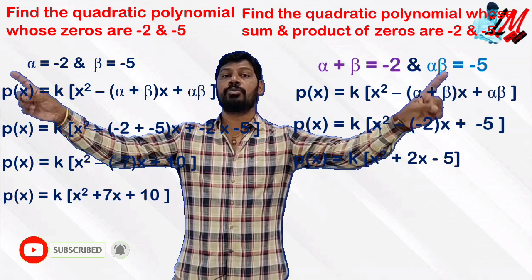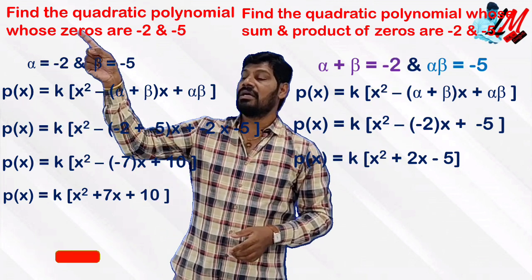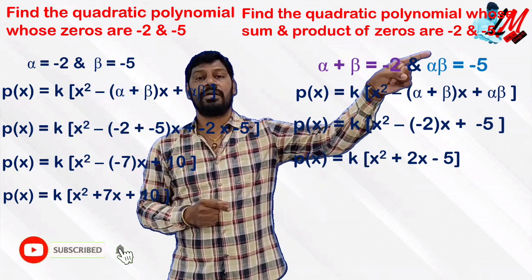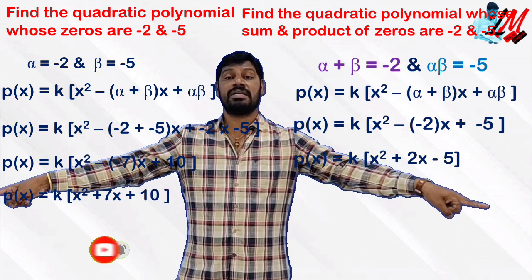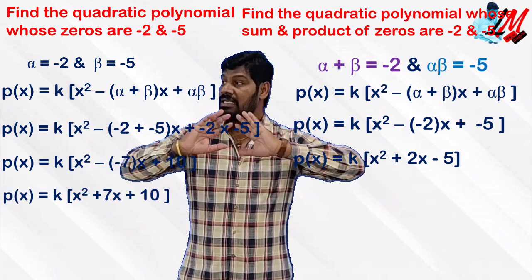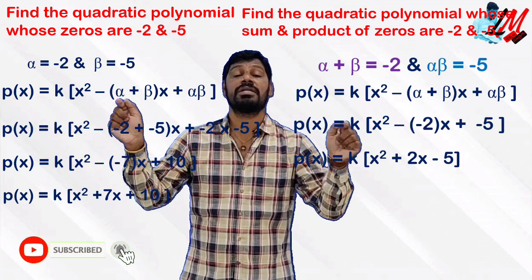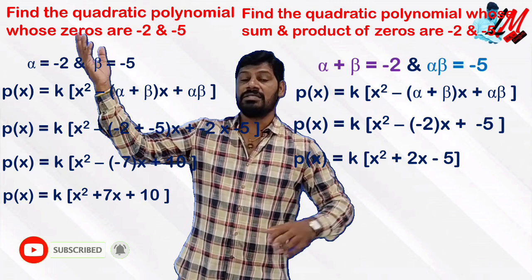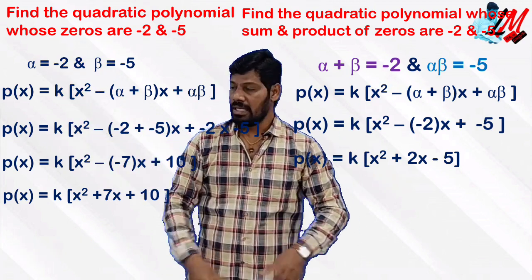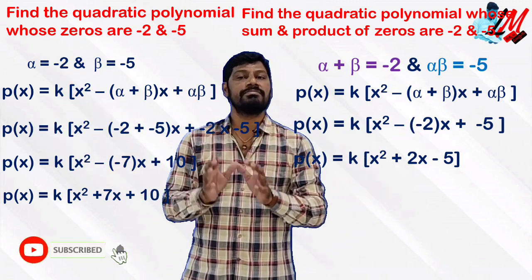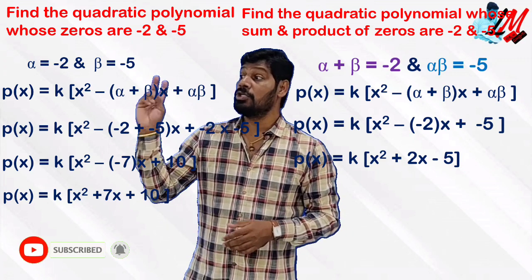My dear children, these two problems should be carefully considered. The sum of zeros and the product of zeros are both clear. We have two different answers. These two problems should be explained in the same way — whichever form the question asks, answer accordingly. This problem is very simple and carries 2 marks.